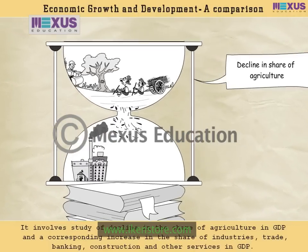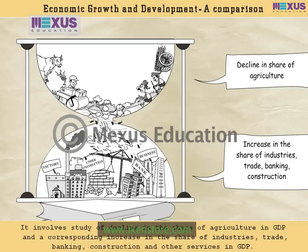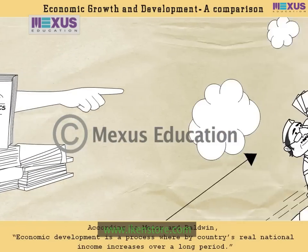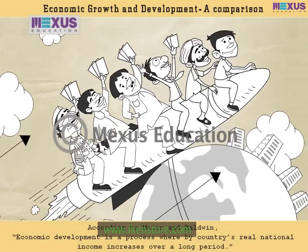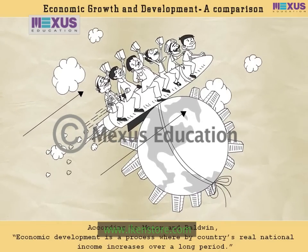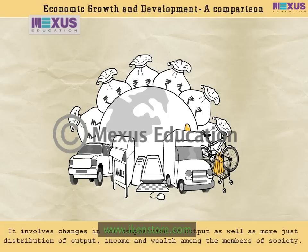Economic Development involves study of the decline in the share of agriculture in GDP and a corresponding increase in the share of industries, trade, banking, construction, and other services in GDP. According to Mayor and Baldwin, Economic Development is a process whereby a country's real national income increases over a long period. It is defined as the development of the economic wealth of the country, aimed at the overall well-being of its citizens, who are the ultimate beneficiaries.